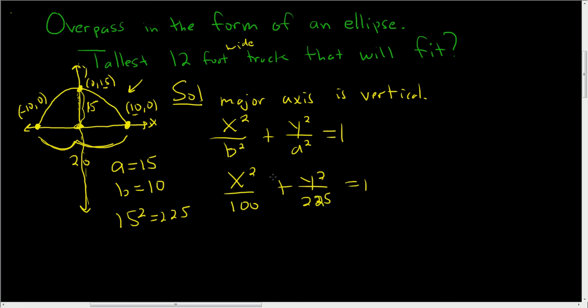So now we have to somehow answer the question. We've altered the picture that they gave us. We wrote down the equation of the ellipse through the picture. And now we actually have to answer this. So the tallest 12-foot wide truck that will fit through the overpass without killing the driver and destroying the truck. Well, let's draw a picture of the truck.